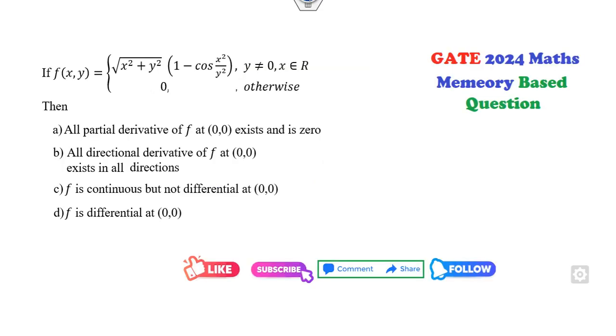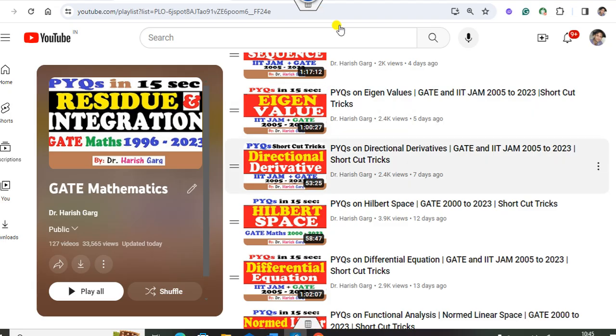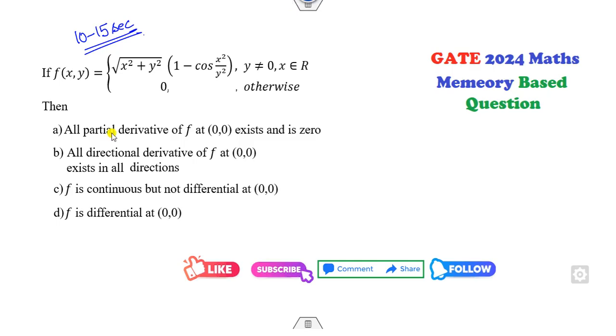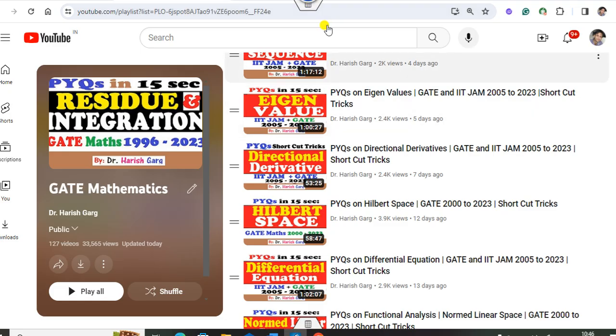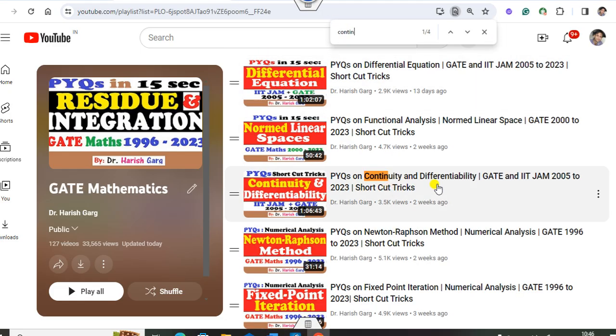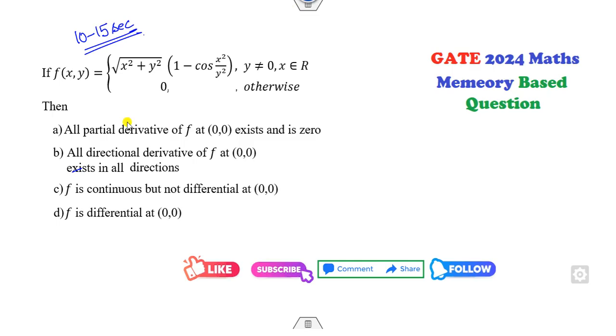Today I have solved this question which I received from some students, and it's a memory-based question: the partial derivative exists, directional derivative exists, and so on. Can you solve this question within a 10 to 15 second time period? Of course you can. How? If you watch my lecture on directional derivative for this part B, and when you've seen my lectures on continuity and differentiability, then you can solve these questions within the 10 to 15 second time period.